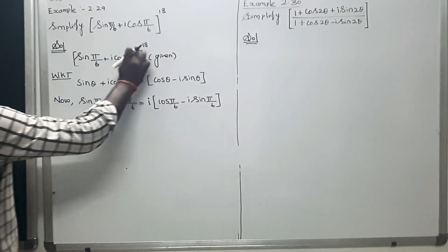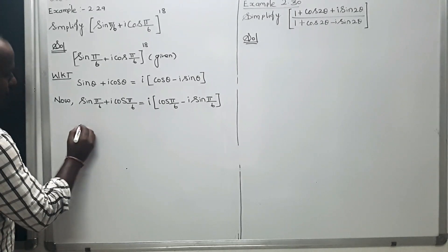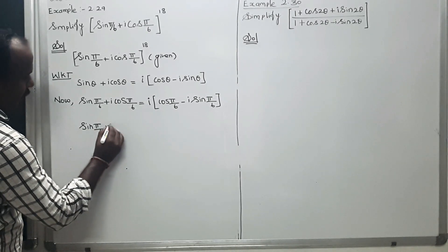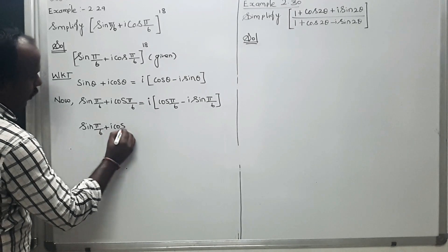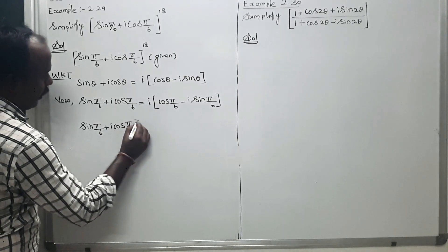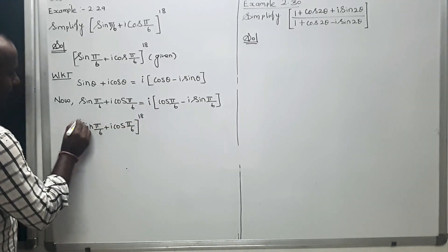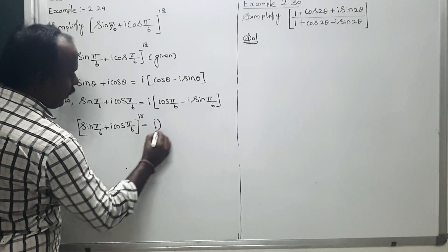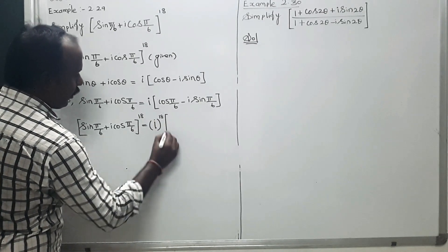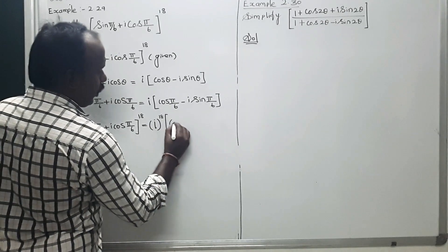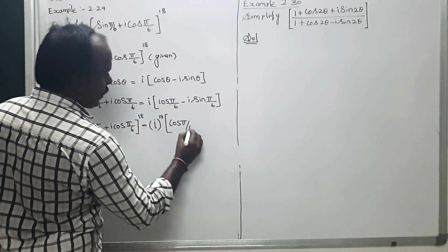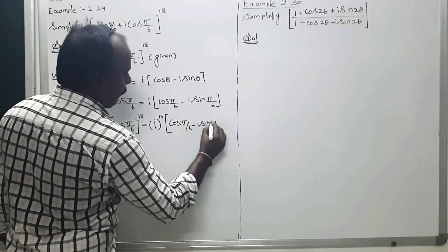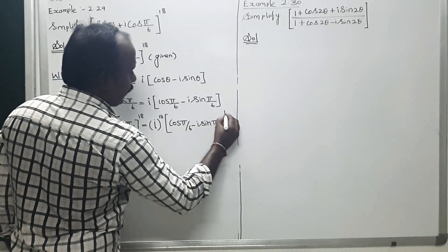Taking power 18 on both sides: (sin π/6 + i cos π/6)^18 = i^18 · (cos π/6 − i sin π/6)^18.